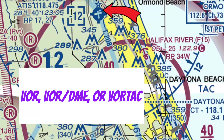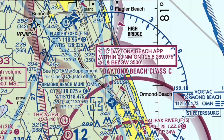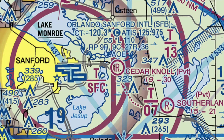I want to draw your attention to this little anchor symbol. This tells us that there's a seaplane base here. This particular example is an untowered seaplane base, but check out this other one — not only does it have a control tower, but it also has fuel services.